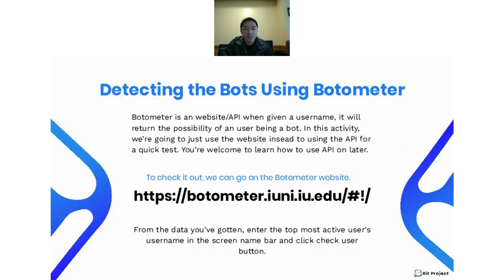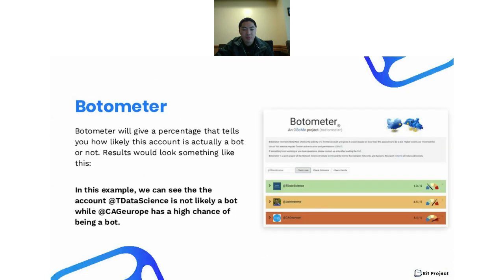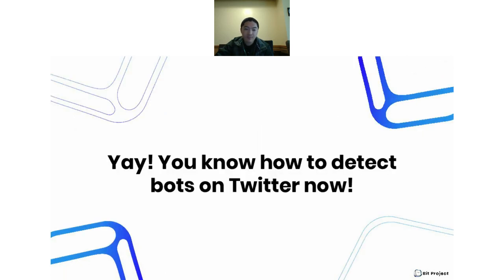We'll use Botometer to help us find out. Botometer is a website that, given a username, will return a probability of that user being a bot. In this activity we're not going to go into how to use the Botometer API — that'll be for later — so for now we're just going to use the website. Whatever data you've got so far, enter the top most active user's username and click 'check user.' Botometer will give you a percentage of how likely this account is actually a bot. In the example, the account 'tdata_signs' is not likely a bot and gets a green banner, while 'CAG_Europe' has a high chance of being a bot.